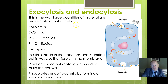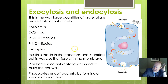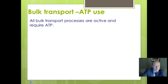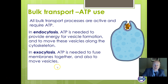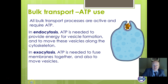So bulk transport involves large volumes of substances being taken in and out: endo is in, exo is out; phago deals with solids, pino with liquids. Bulk transport is active — it needs ATP. In endocytosis, ATP is needed to make the vesicles and also to move them along the cytoskeleton. In exocytosis, ATP is needed to make the vesicles fuse together and again to move vesicles around. So bulk transport is also active because ATP is required, providing the energy for vesicle formation and movement.